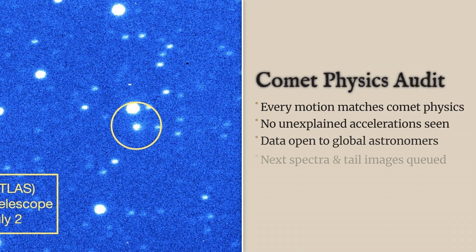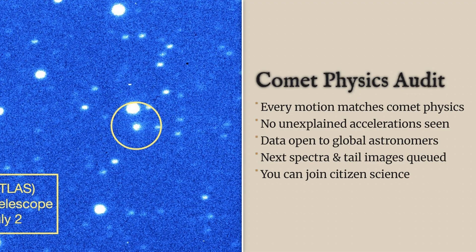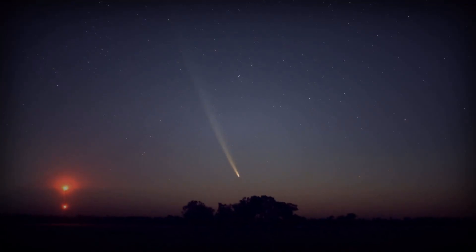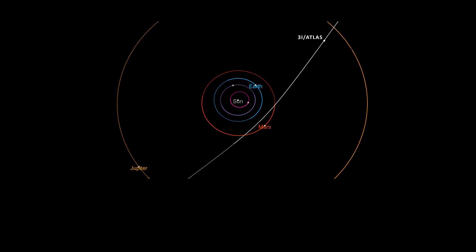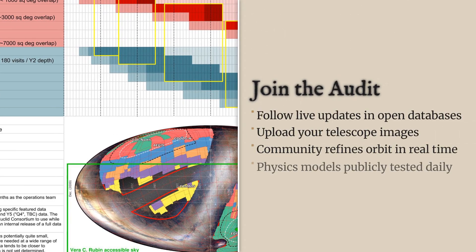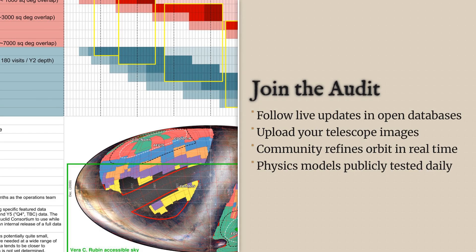No unexplained accelerations or technosignatures have been detected. Every motion fits known comet physics. Major observatories like JWST, ALMA, and VLT have time scheduled to track the comet's spectrum and dust after perihelion. Anyone can follow updates or upload images through the comet observation database or the minor planet center, helping refine models in real time. The next round of data could come from you.